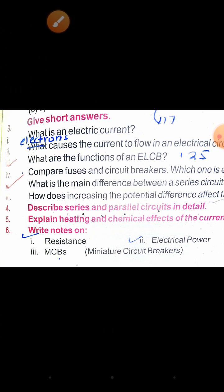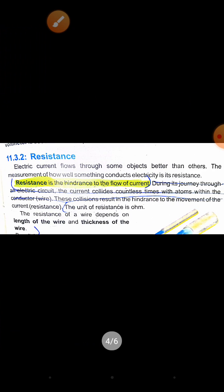Question number 6: write a note on resistance, electric power, and MCB. In this question, we have three concepts. The first one is resistance. Resistance is the hindrance to the flow of current.